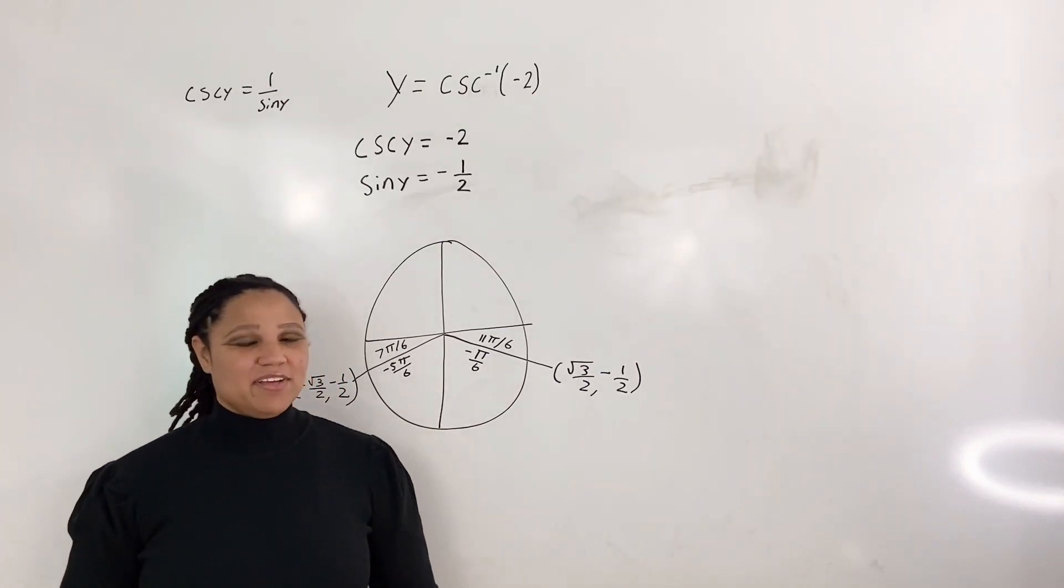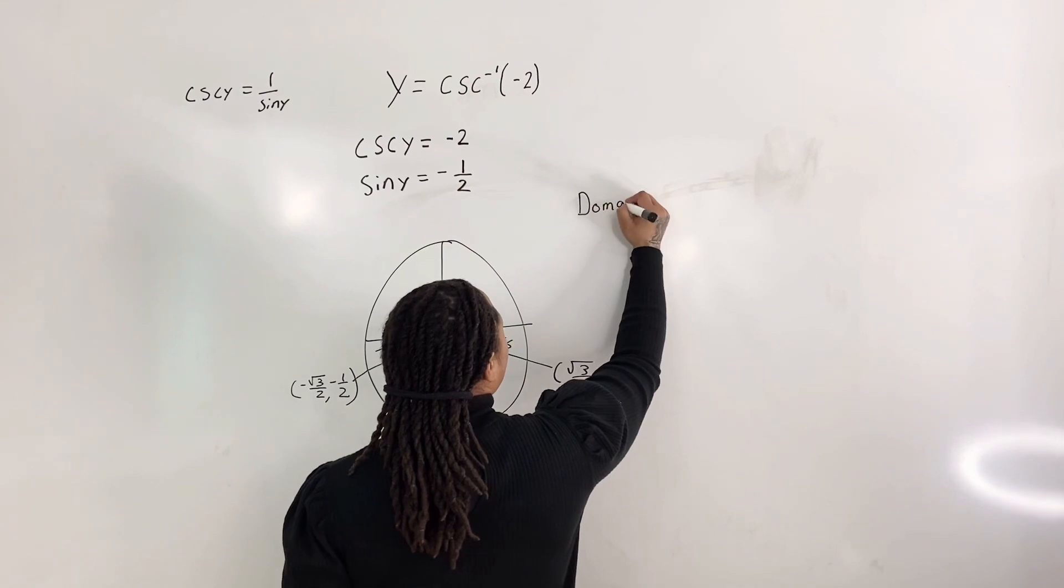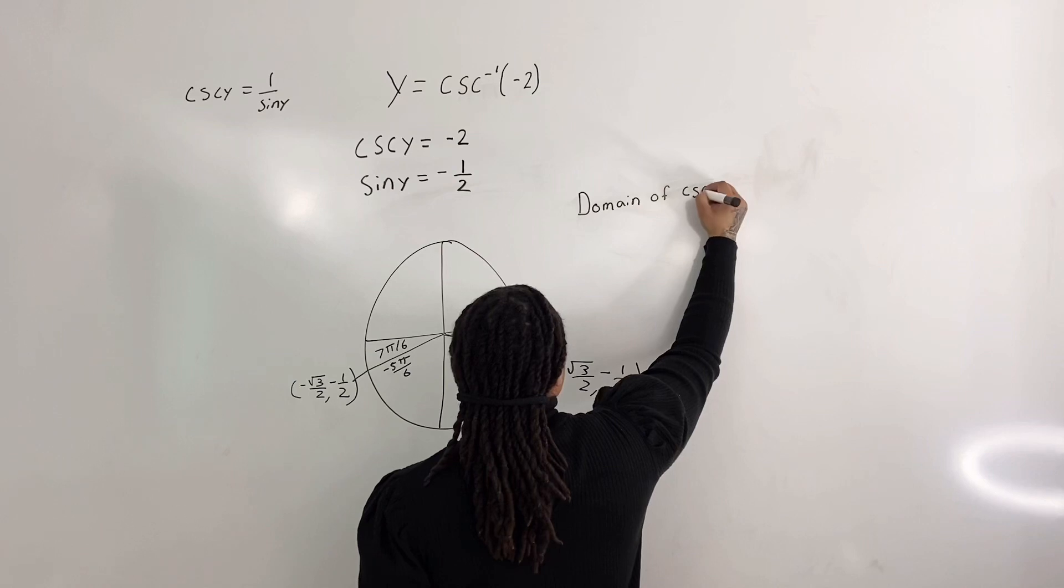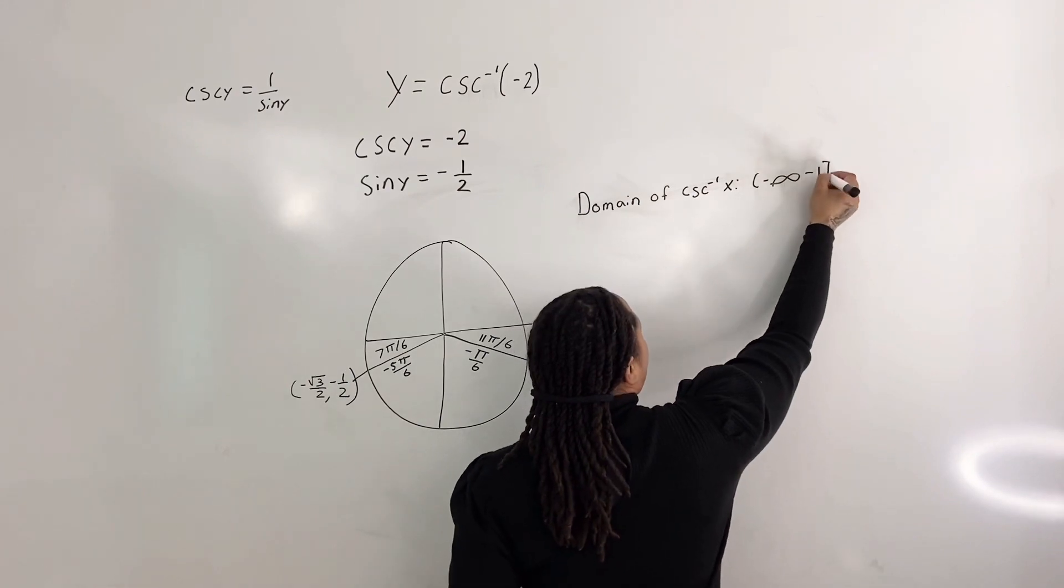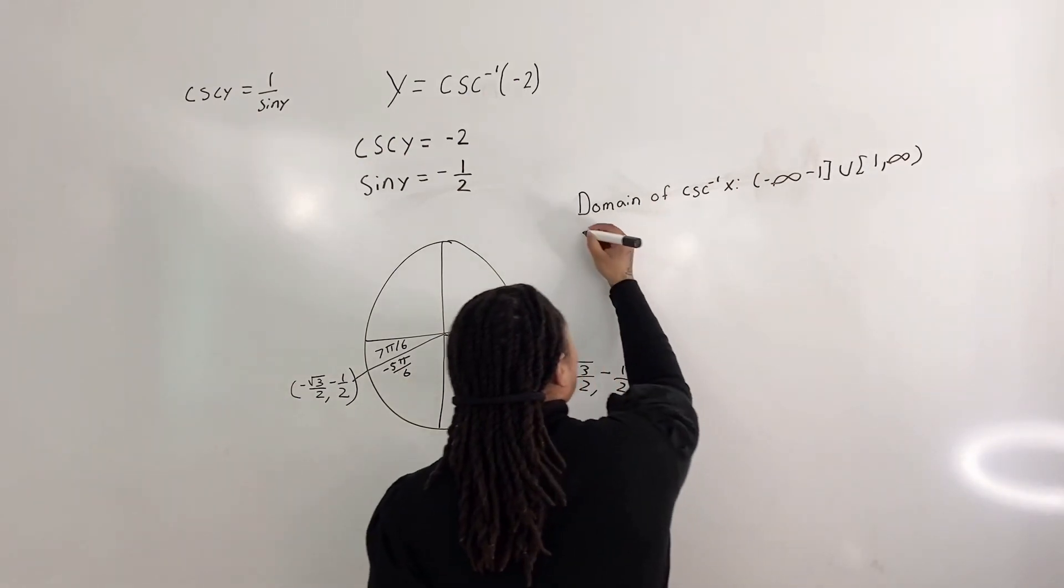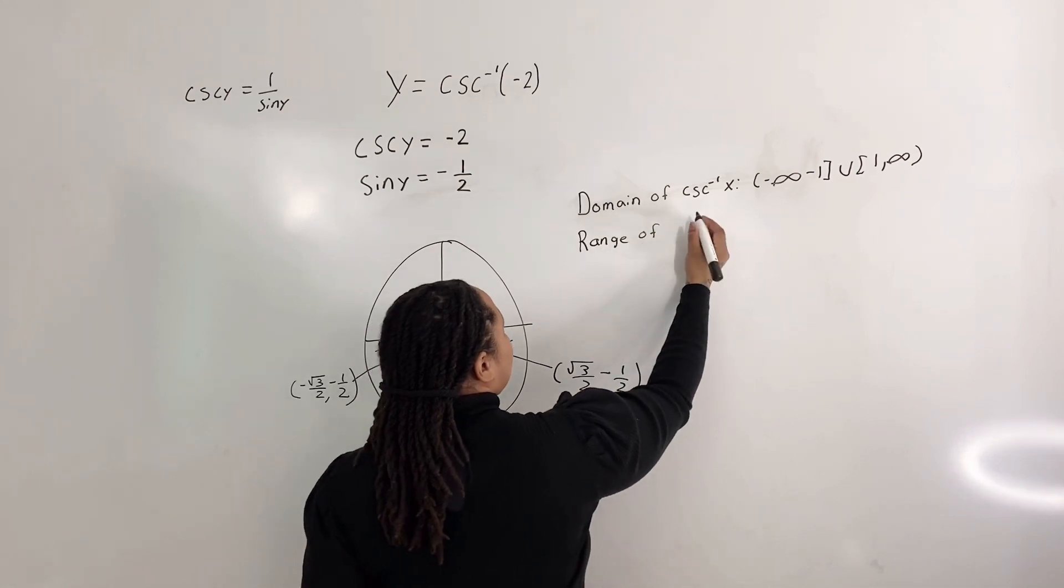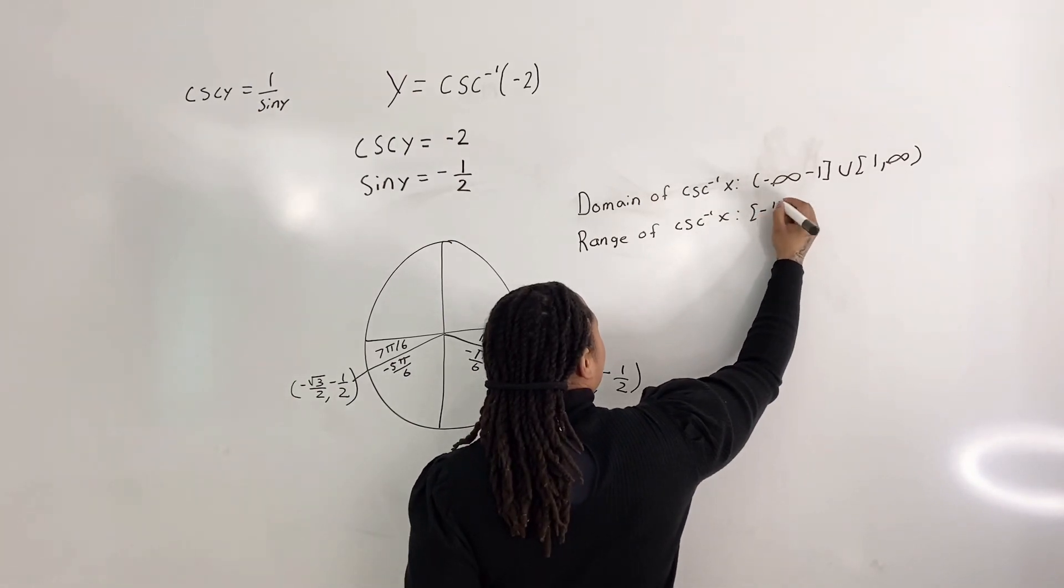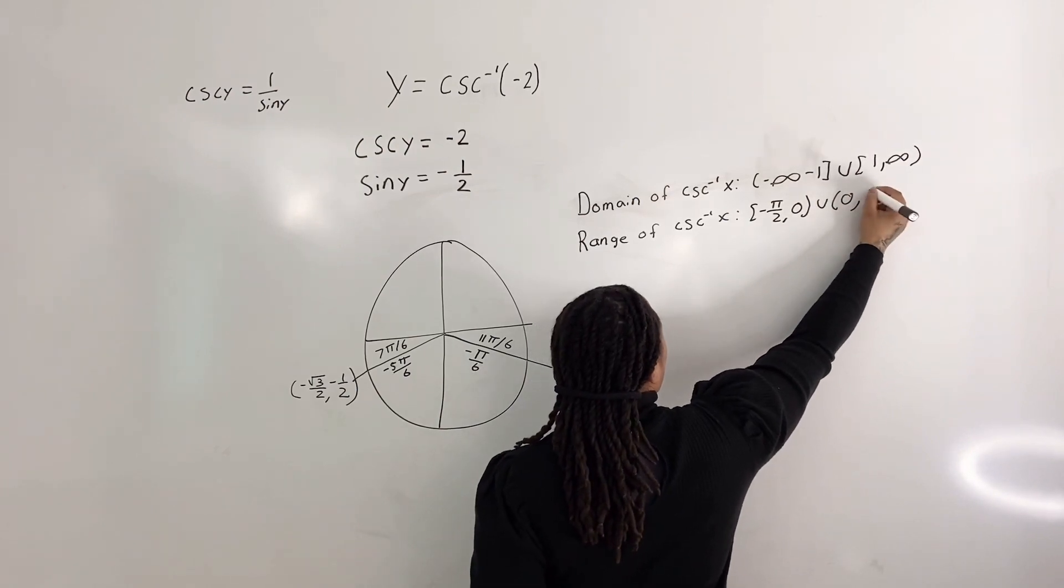So what is the domain of inverse cosecant x? The domain of inverse cosecant x is from negative infinity to negative 1 union from 1 to infinity. And the range of inverse cosecant x is from negative pi over 2 to 0 union from 0 to pi over 2.